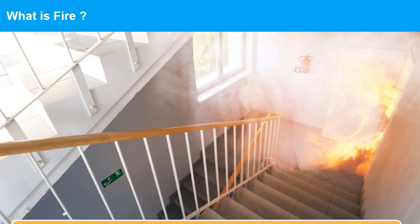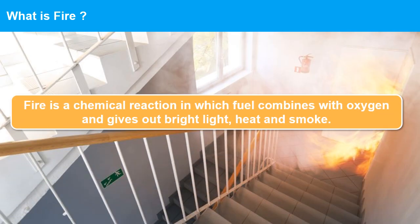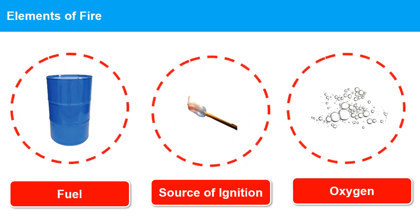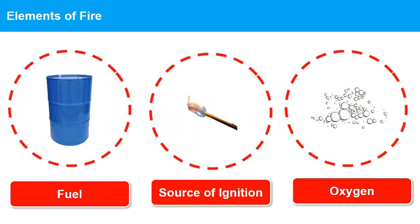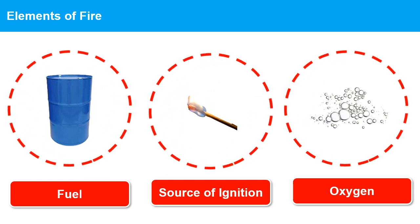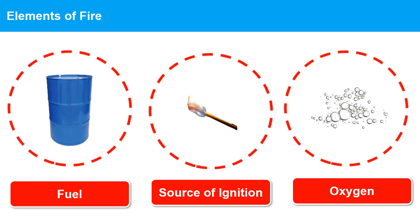What is fire? Fire is a chemical reaction in which fuel combines with oxygen and gives out bright light, heat and smoke. For fire to exist, three things must be present: fuel, heat or source of ignition, and oxygen.